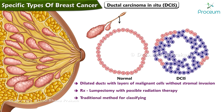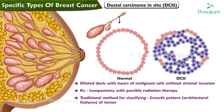The traditional method for classifying ductal carcinoma in situ lesions is primarily based on the growth pattern and architectural features of the tumor, and recognizes five major types.